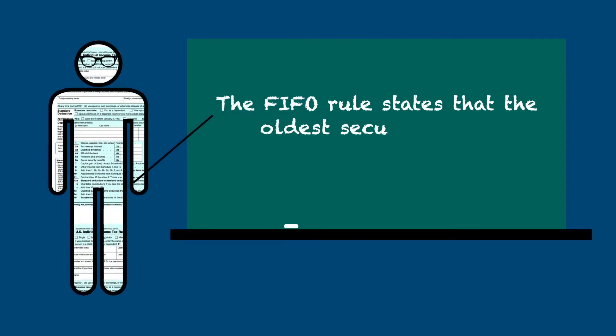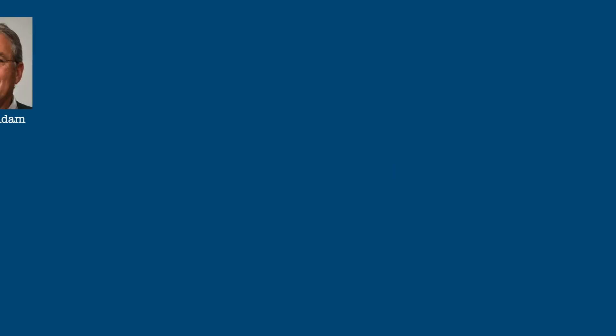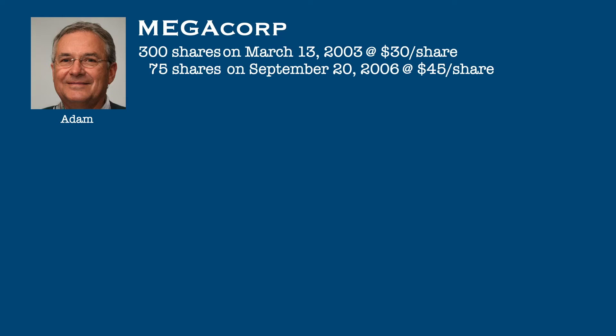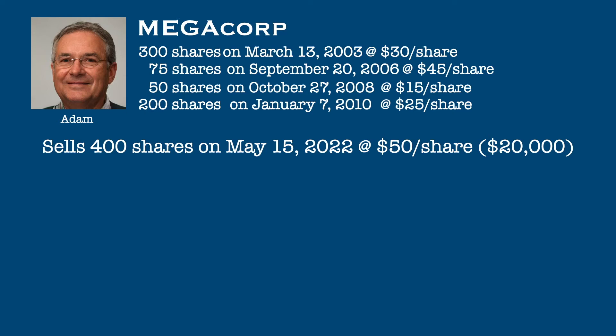The FIFO rule states that the oldest securities you purchased are the first ones you sold. This can be explained much better with an example. Adam has been investing in Mega Corporation for many years. Over the years, he has made purchases of Mega Stock on several different dates at several different prices. He purchased 300 shares on March 13th, 2003 at $30 a share; 75 shares on September 20th, 2006 at $45 per share; 50 shares on October 27th, 2008 at $15 per share; and 200 shares on January 7th, 2010 at $25 per share. He decides to sell 400 of his shares on May 15th, 2022 at $50 per share for a total of $20,000.